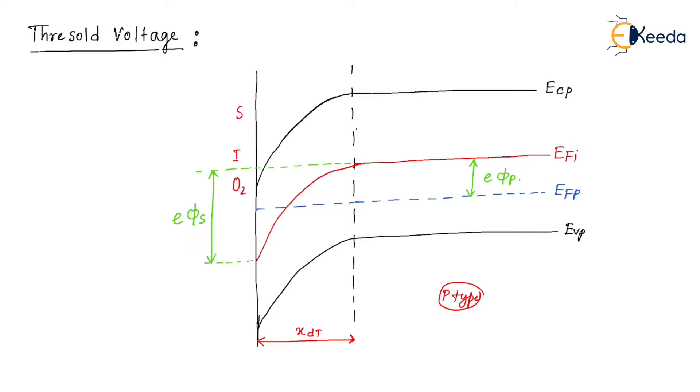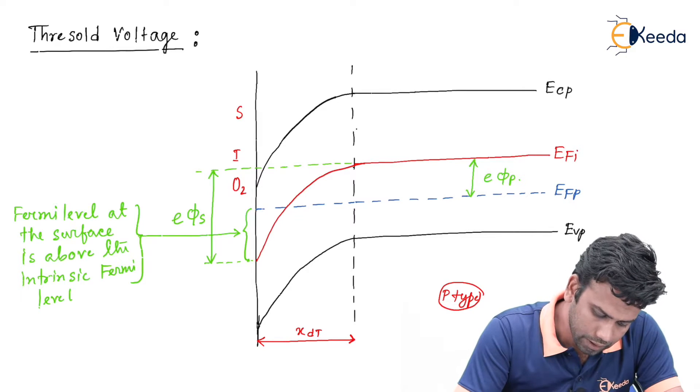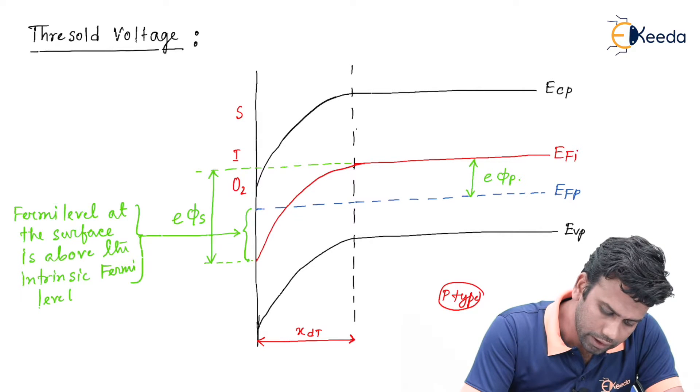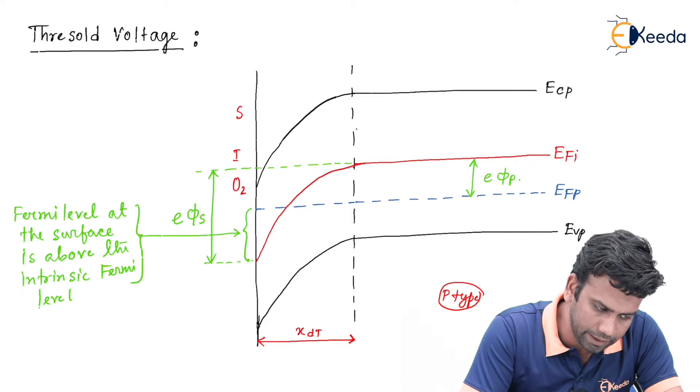This gap of energy is the Fermi level at the surface above the intrinsic Fermi level by this amount. This phi p is the gap between the Fermi level at the bulk and the intrinsic Fermi level at the bulk.